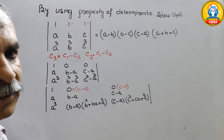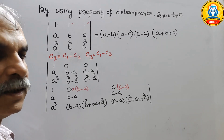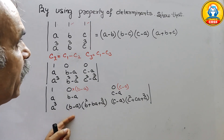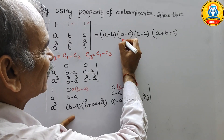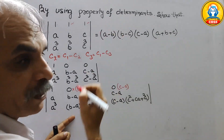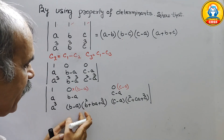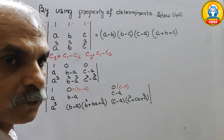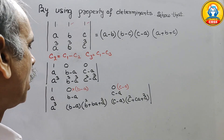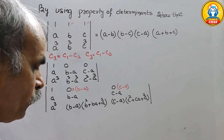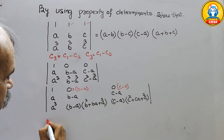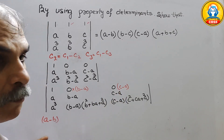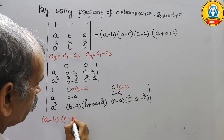Looking at what the question asks — they want (b minus c) and (a minus b) as factors. Here we have (b minus a), so we take it out and introduce a minus sign to convert it to (a minus b). Similarly, (c minus a) is taken as a common factor from the third column.